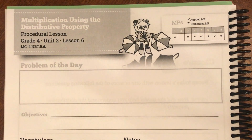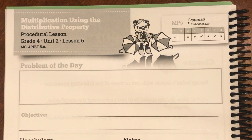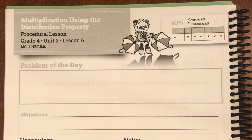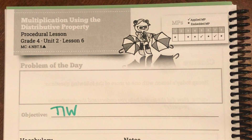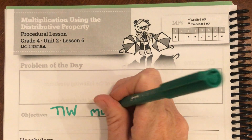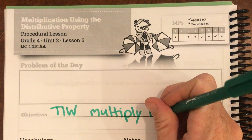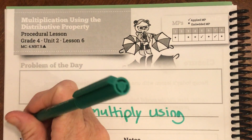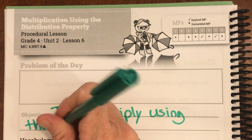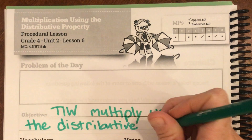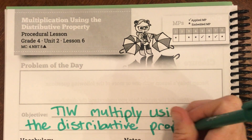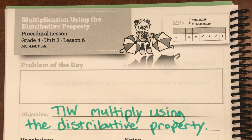Good morning ladies and gentlemen. Today we are on page 97 of your student journal and our objective for the day is: today I will multiply using the distributive property.